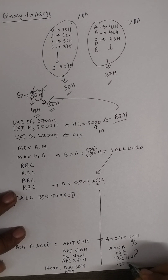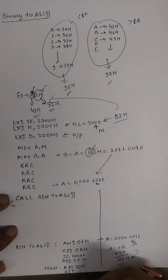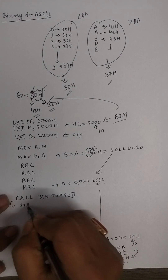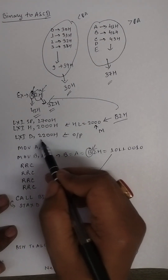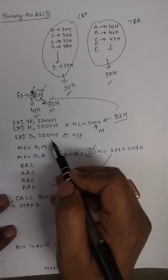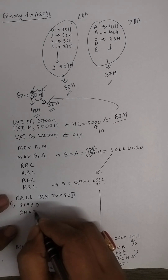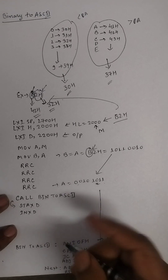When the subroutine returns, control goes back to the main program. I store the result 42H into the memory location pointed to by the DE register pair (2200H). Then I increment the DE register pair so the next output value will be stored in the next memory location.